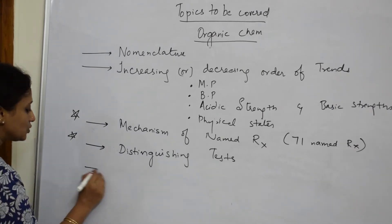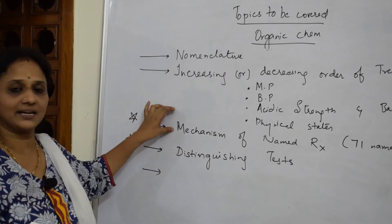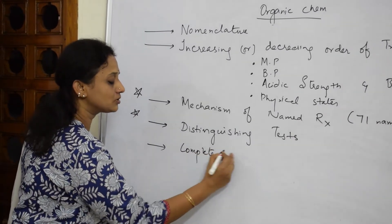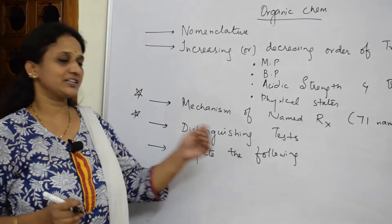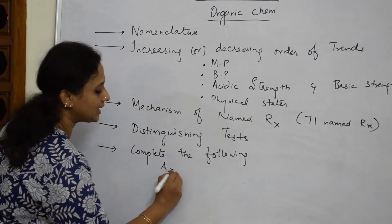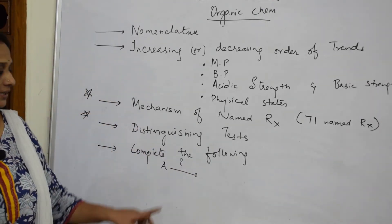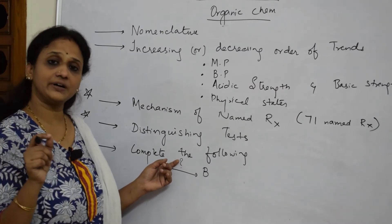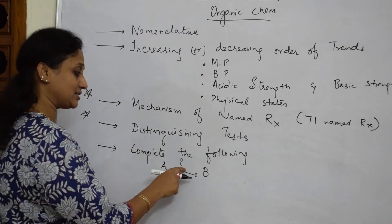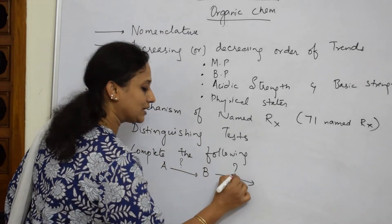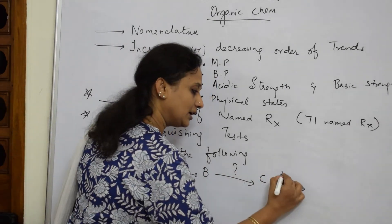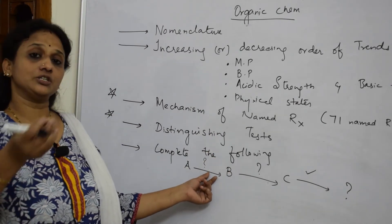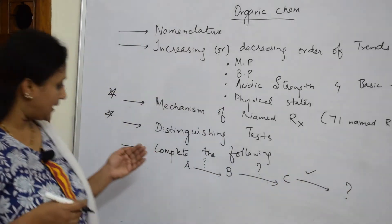Next is 'Complete the Following' — one of the most important question types. You are given a reactant A and a product P, and you must find the missing reagent, or vice versa. The reagent may be given and the product questioned. At every stage of a reaction you should have a clear idea: which reagent to use, what the product is, and what the next step should be.